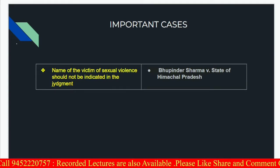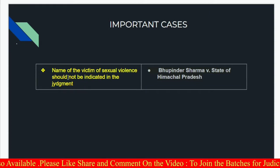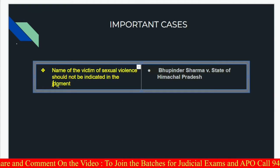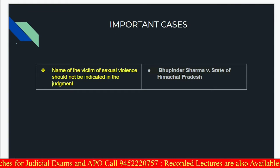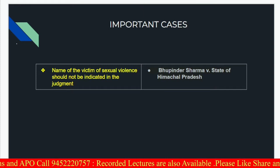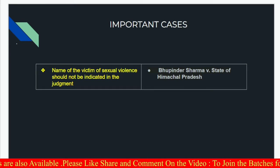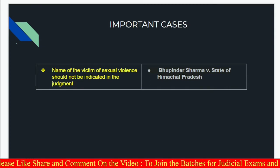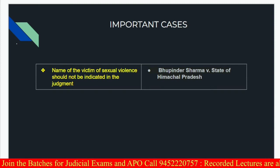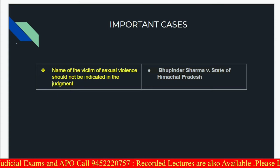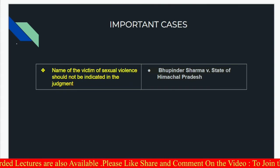There is one important case to note: the name of the victim of a sexual offense should not be indicated in the judgment. Please note the correct spelling of 'judgment' here. This was held in the case of Bhupinder Sharma versus State of Himachal Pradesh. Hopefully the judgment chapter has been fully understood. You will find direct questions from this chapter — for example, MPPCSJ 2011 asked who defines the quantum, and the answer is State or District Legal Services Authority. UPPCS 2016 also asked a similar question. So this is all about the judgment chapter. Thank you and all the best.